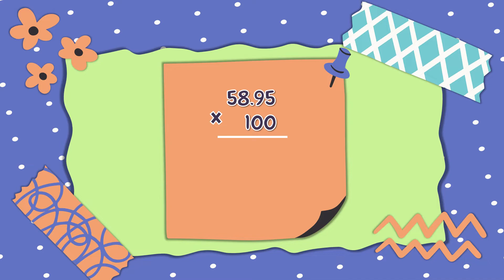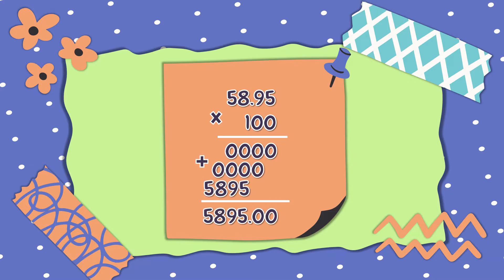This time, let us multiply it by 100. Again, write the numbers in column and start multiplying from right going to the left. So, the answer is 5,885.